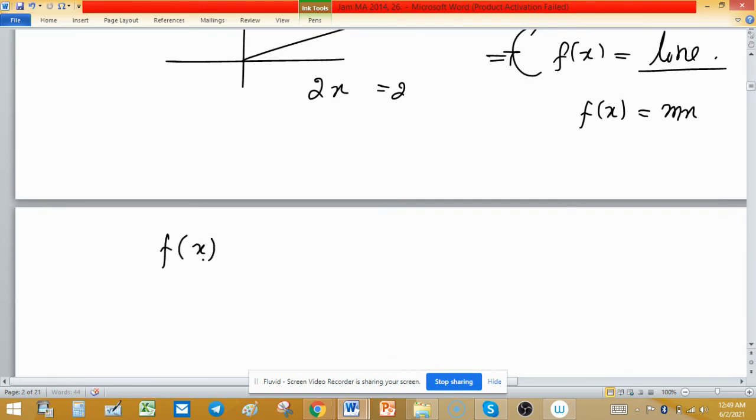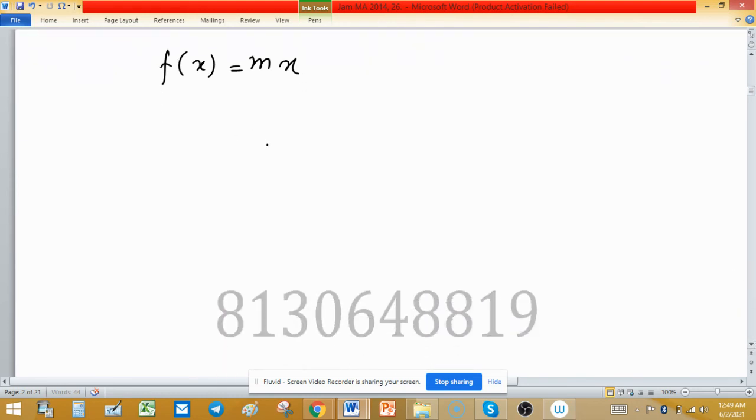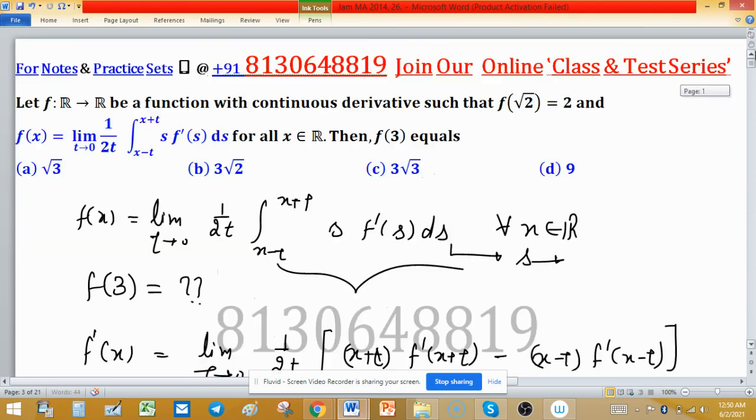So we obtained that fx equals mx, but m is not known to us. So we will find that and then we can easily find out f(3). As first condition is given f(√2) = 2, now put this condition here. So using this one we can write 2 equals √2 × m. This implying that m equals √2. Now we have the value of m, so fx will be √2 × x. Now put 3 here, so 3√2 is the value. Which option is giving 3√2? So 3√2 is in option B. So B option is correct.